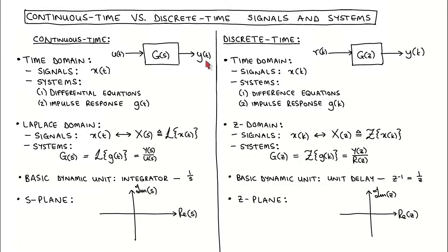One way to model discrete time systems in the time domain is with difference equations, where we describe the relationship between a system's signals and their time delayed versions. The analogous continuous time model is differential equations, where we describe the relationship between a system's signals and their derivatives.